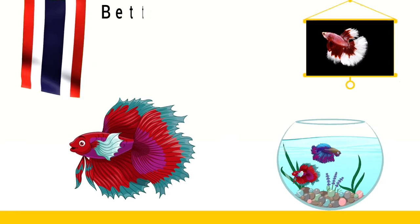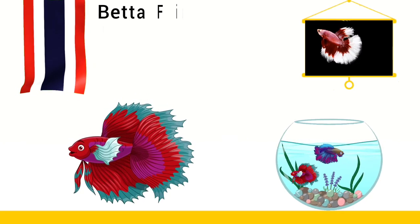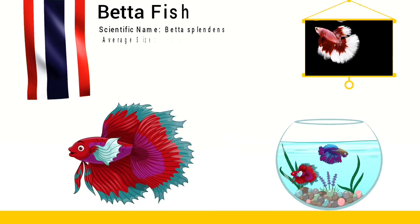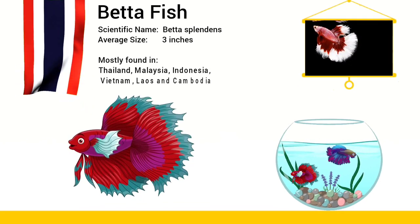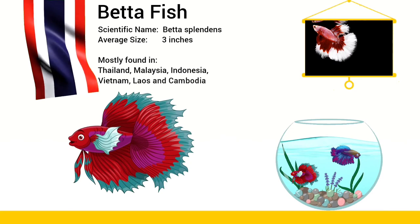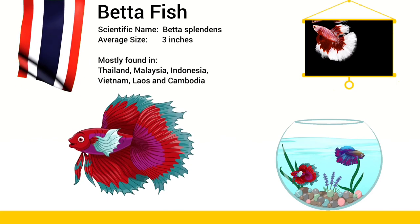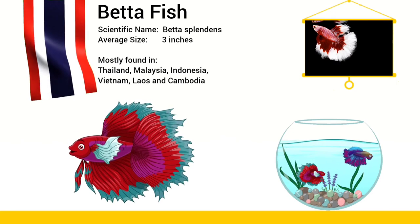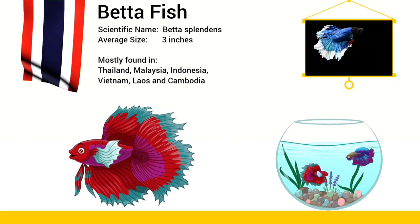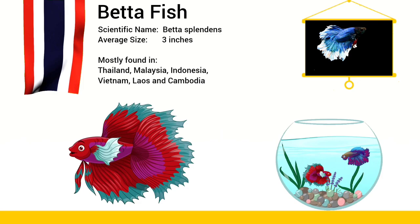Betta fish originate from Thailand but can be found in nearby countries such as Malaysia, Indonesia, Vietnam, Laos and Cambodia.